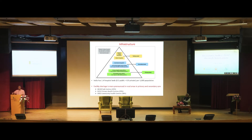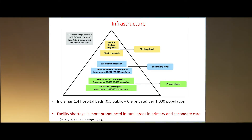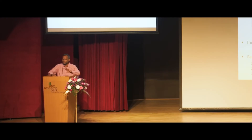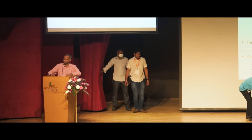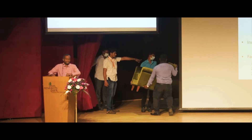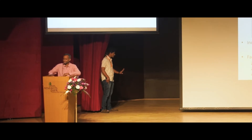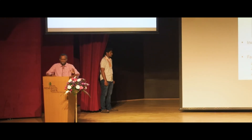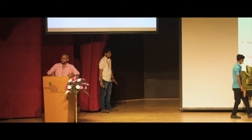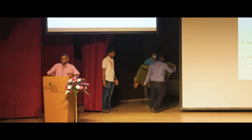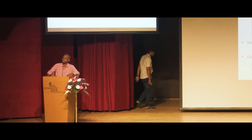Many of you may not realize this — India actually has one of the best structural healthcare systems. We have healthcare units catering to 4,000-5,000 people all the way up to district level. India also has a reasonable number of hospital beds, except it is skewed between urban and rural areas. There is a facility shortage in rural areas, and the problem is largely not about funding but about governance and staffing those facilities with people.